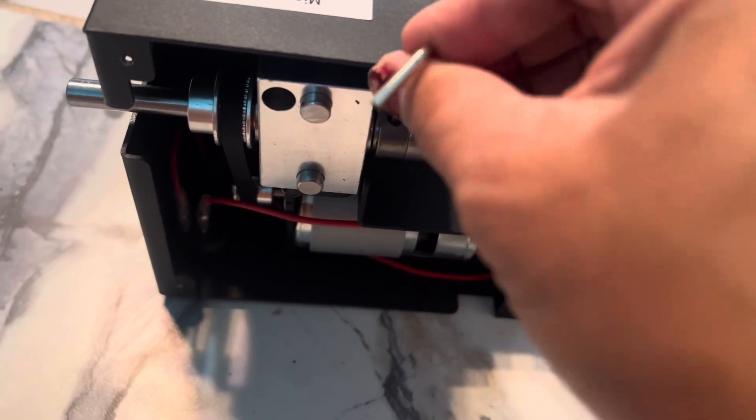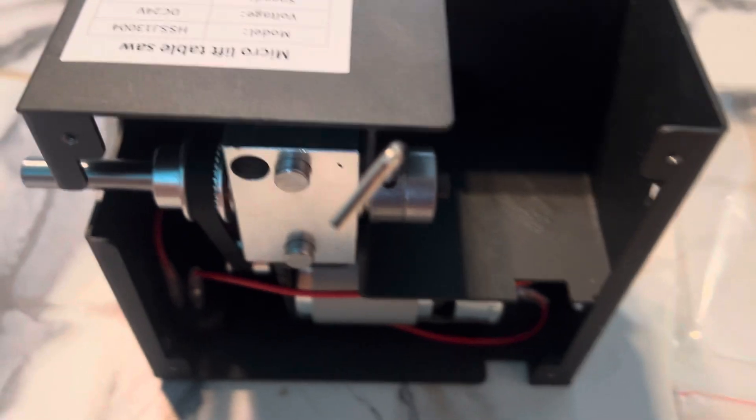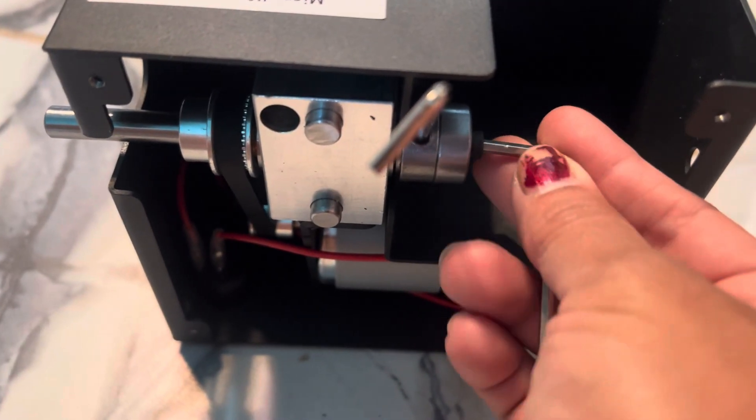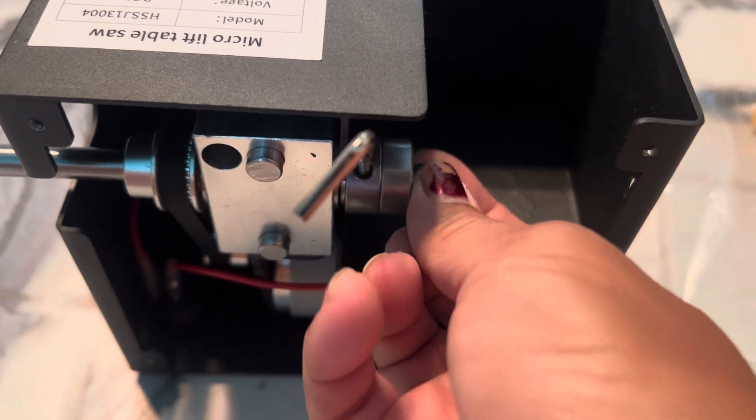So you open the top of the table saw, and after that you go to this screw and saw blade clamp. This is where the saw blade will go.